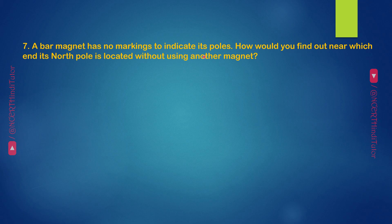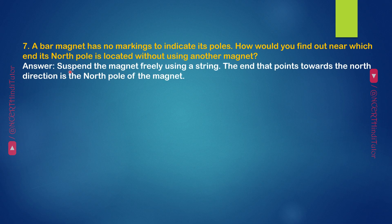Question 7: A bar magnet has no markings to indicate its poles. How would you find out near which end its north pole is located without using another magnet? Answer: Suspend the magnet freely using a string. The end that points towards the north direction is the north pole of the magnet.